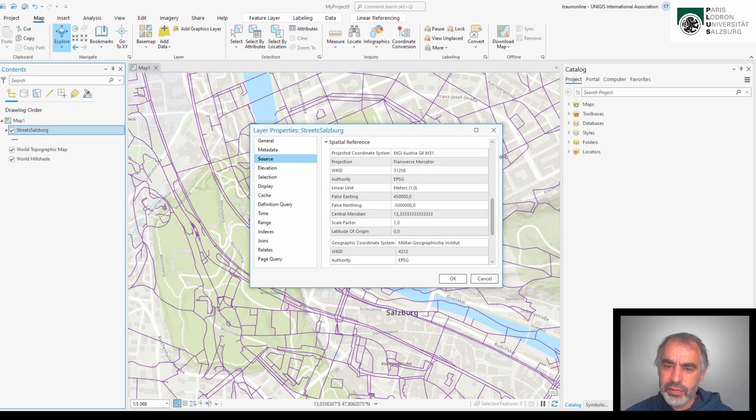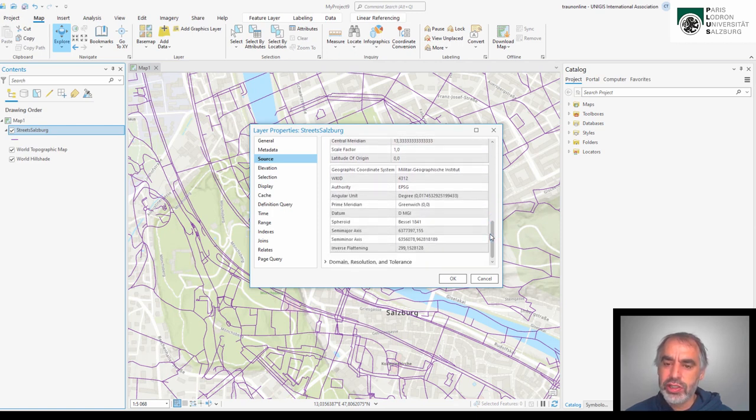Let's check first the coordinate system of our street network here on the properties. I go to source and then we have this spatial reference in there. And you can see we have a projection involved here. I will go to that later. So the projection is based on the so-called geographic coordinate system in this ArcGIS terminology. Or we can even say it's a geodetic datum. And this geodetic datum is named Militärgeografischer Institut or MGI. And it's based on this Bessel spheroid or ellipsoid with two axes and the semi-major axis that is the distance from the earth center towards the equator is 6377 kilometers. And the semi-minor axis from the earth center or the ellipsoid center towards the pole is 6356 kilometers.